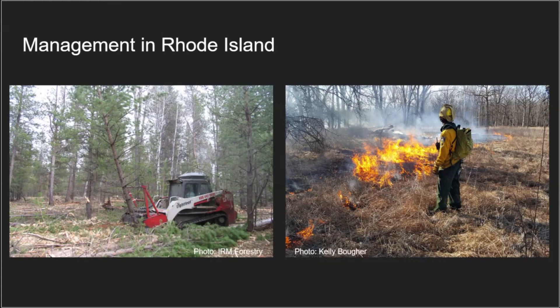Land management can take many forms. Two examples are cutting — either selective cutting where they take a subset of trees and leave some canopy, or clear-cutting where they open up the whole area so it regenerates — and we can also mimic wildfires by doing prescribed burns.